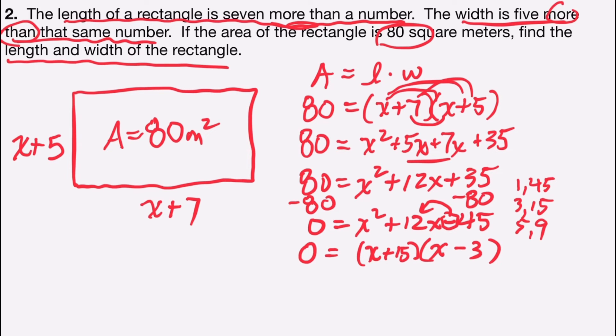Now I'm going to set each factor equal to zero and solve. So x plus 15 would equal zero, or x minus 3 would equal zero. I'm going to subtract 15 from both sides and find out that x equals negative 15. But again, since this is length and width and a distance, I can't have a negative distance. So that answer can't be true.